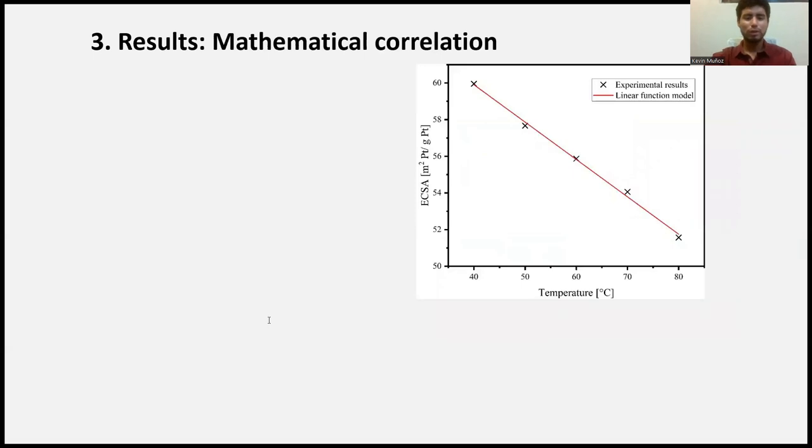After the data processing, the experimental results show the ECSA value decreased from 59.96 to 51.57 when the temperature is varied from 40 to 80 degrees Celsius. This is a reduction of ECSA about 14% in the temperature range of study. This also corroborates the observation made about ECSA reduction noticed in the geometry of the curves in the cyclic voltammograms.